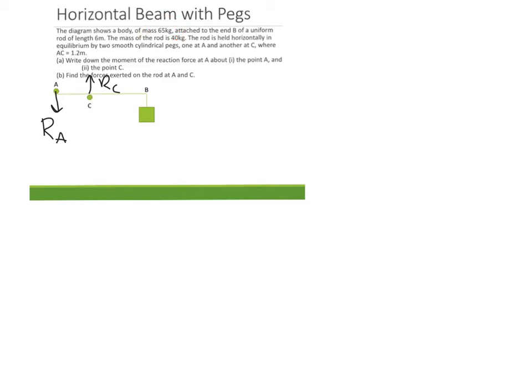So looking at the question now then, we've got a body of mass 65 kilograms attached at the end B. So this is 65G for its weight going down. It's a uniform rod of length 6 meters. So that means that the mass of the beam is right in the middle, 3 meters.